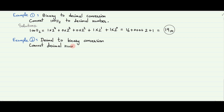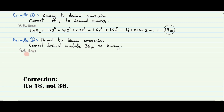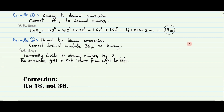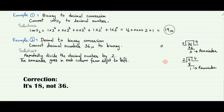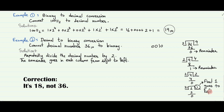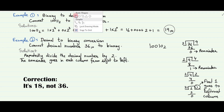Example 2 is decimal to binary conversion. We will convert the decimal number 18 base 10 to its binary equivalent. Working from the right, repeatedly divide the number by 2; the remainder goes in each column. For example, 18 divided by 2 equals 9, so the remainder is 0, which goes in the 1's column. 9 divided by 2 equals 4, so the remainder is 1, which goes in the 2's column. 4 divided by 2 equals 2, and the remainder is 0, which goes in the 4's column. 2 divided by 2 equals 1, and the remainder is 0, which goes in the 8's column. Finally, 1 divided by 2 equals 0 with a remainder of 1, which goes in the 16's column. Therefore, the answer is 10010 base 2.